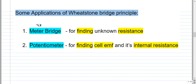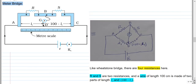Now let us consider some applications of the Wheatstone Bridge principle. The first is the meter bridge, used for measuring the value of an unknown resistance. This is its circuit diagram: there is a long wire from A to C of length 100 cm, which is 1 meter — that is why it is called a meter bridge. Resistances R and S are connected at the two ends, and L-shaped metallic strips have very low (nearly zero) resistance.